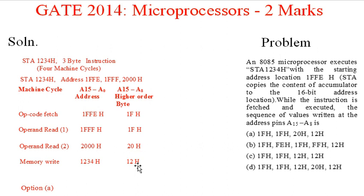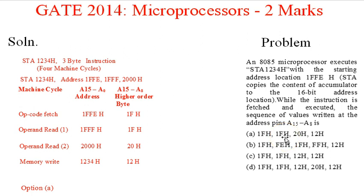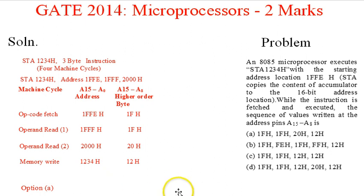We observe that the correct option is option A: the sequence of upper byte values at address pins A15 to A8 is 1F, 1F, 20, and 12H. This is the content of the upper byte of the address for each machine cycle. Therefore, option A is the right choice.